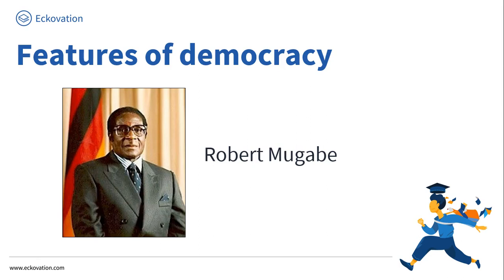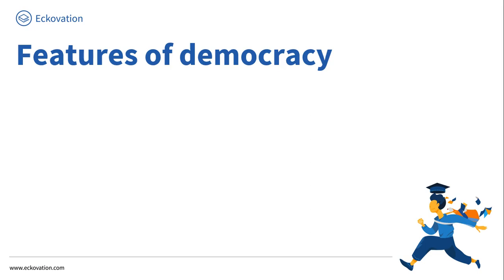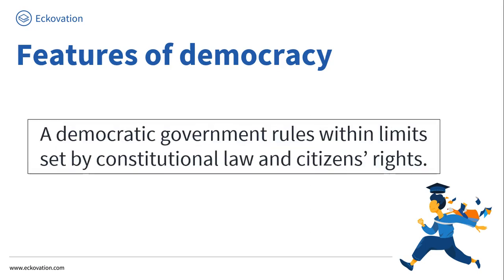Television and radio were controlled by the government, which only gave the ruling party's point of view. Due to all these malpractices, even though the party's leader was popular, the party cannot be called democratic. From this example, the fourth and last feature of democracy is: a democratic government rules within limits set by constitutional law and citizens' rights.